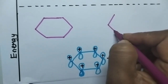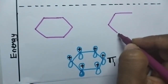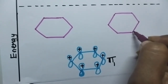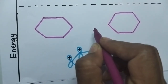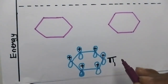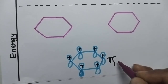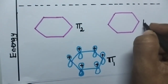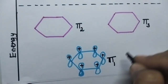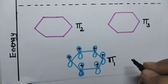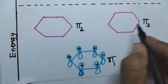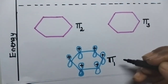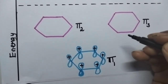Pi 2 and pi 3 molecular orbitals of benzene have the same energy, so they must be represented at the same energy level. As we move from pi 1 to pi 2 and pi 3 molecular orbitals, pi 1 molecular orbital has no nodal plane, but pi 2 and pi 3 molecular orbitals each have one nodal plane. So from pi 1 to pi 2, the number of nodal planes increases.